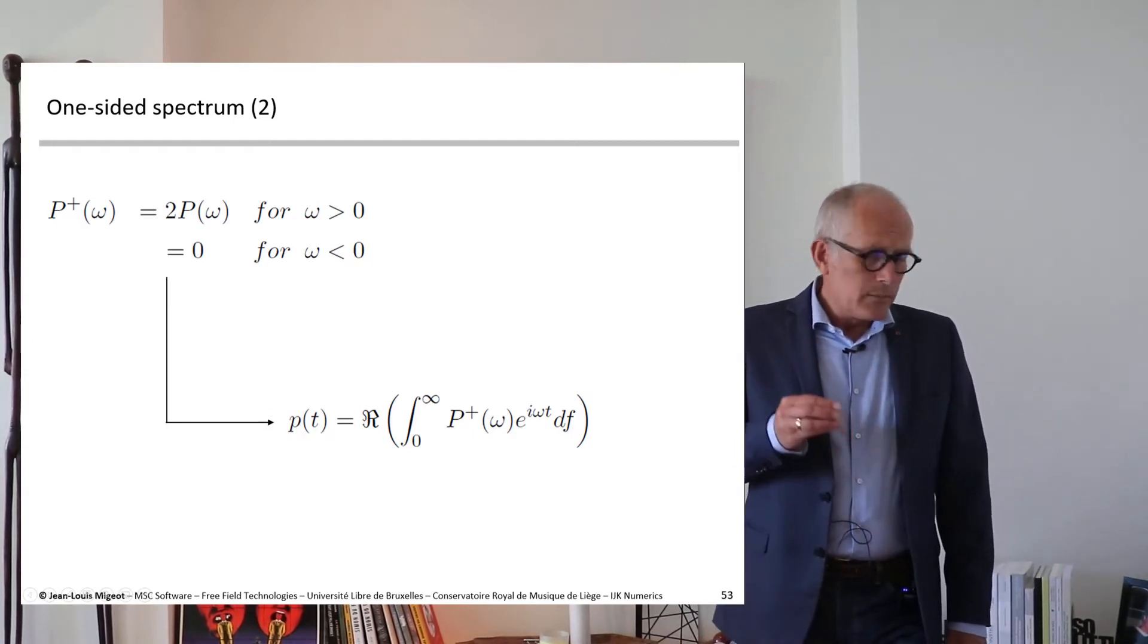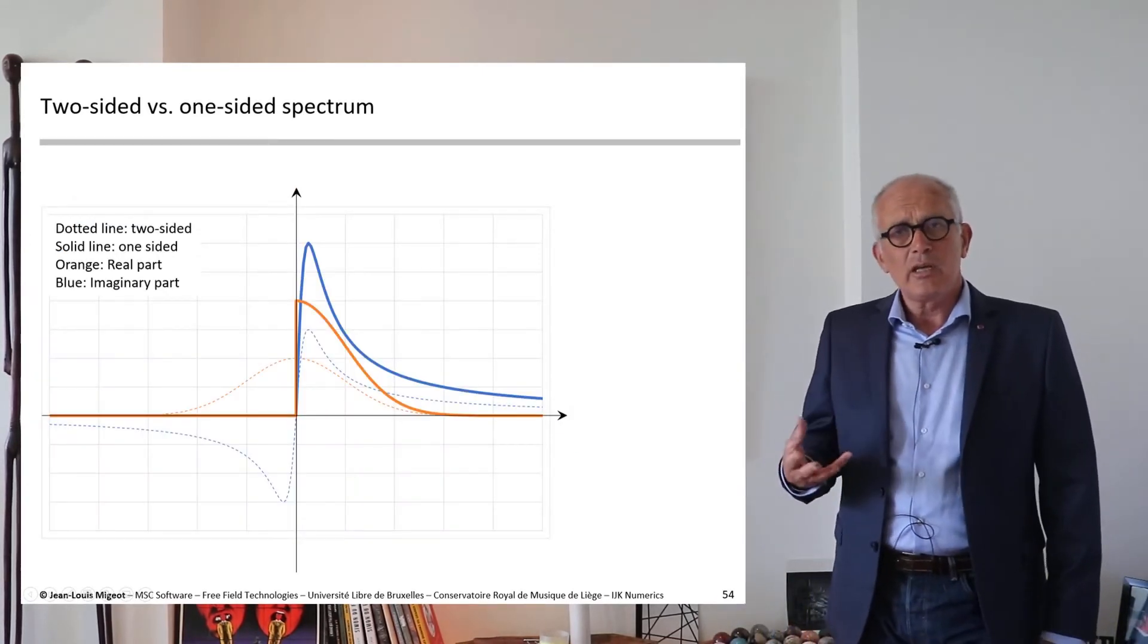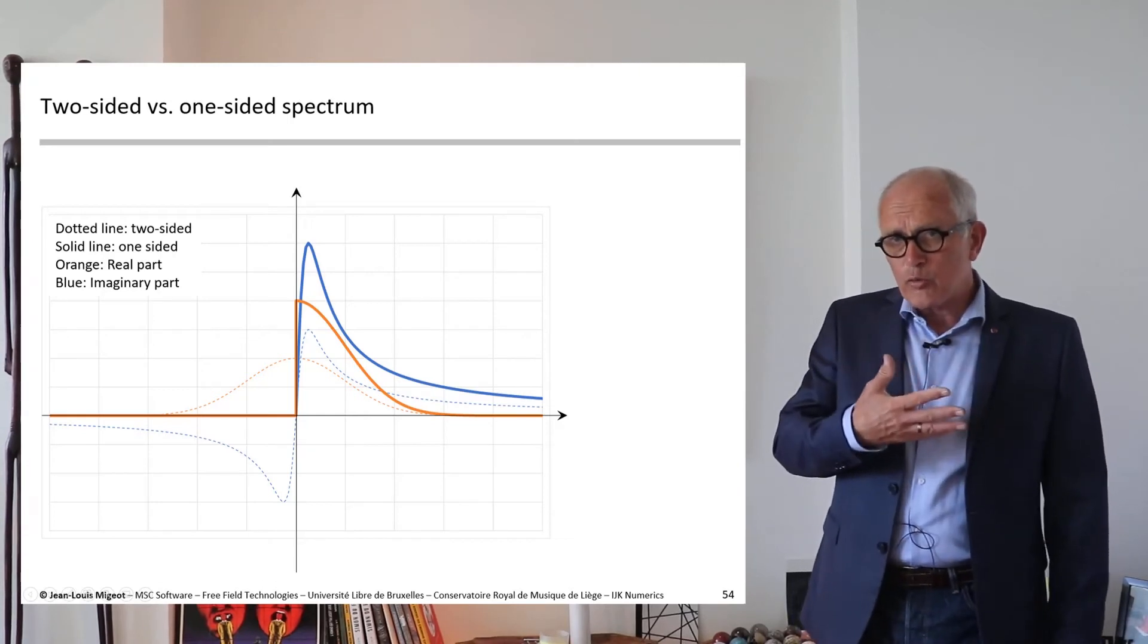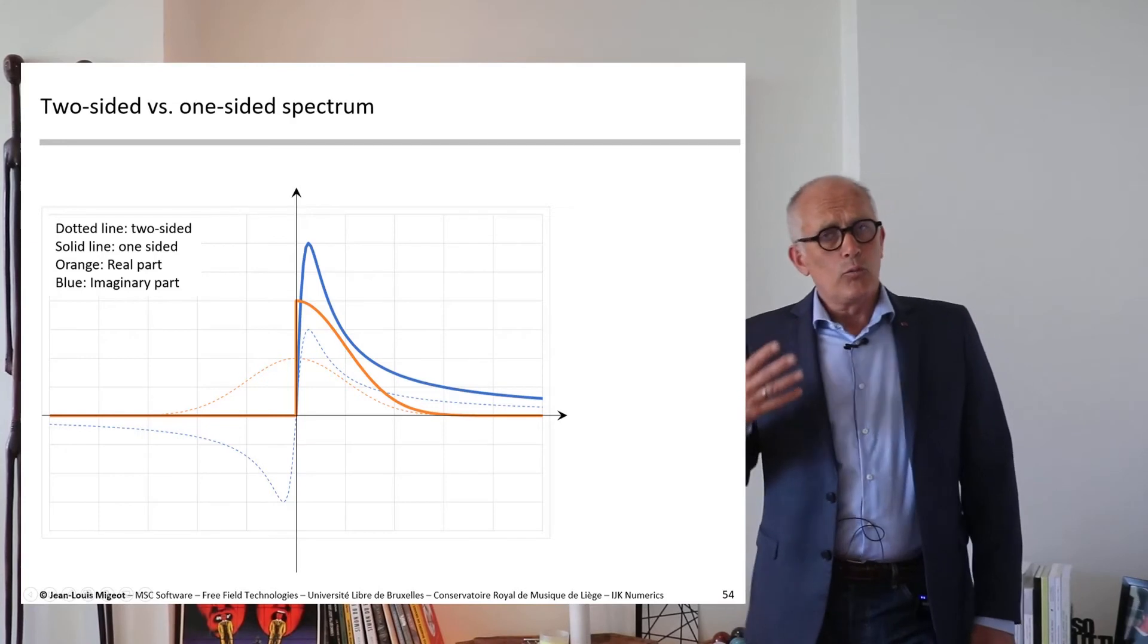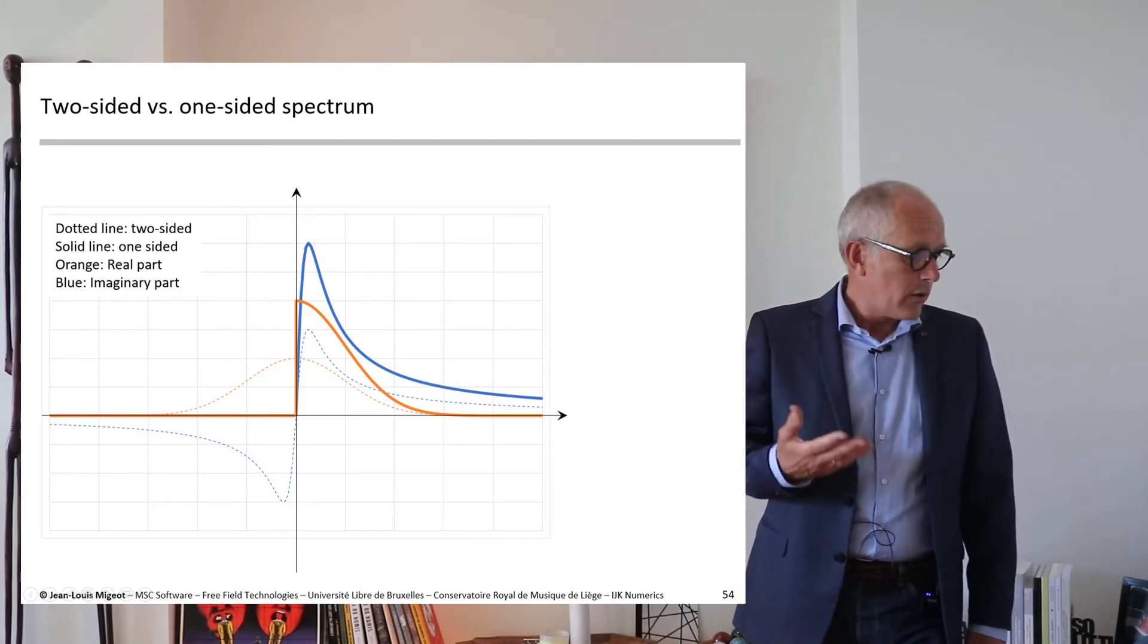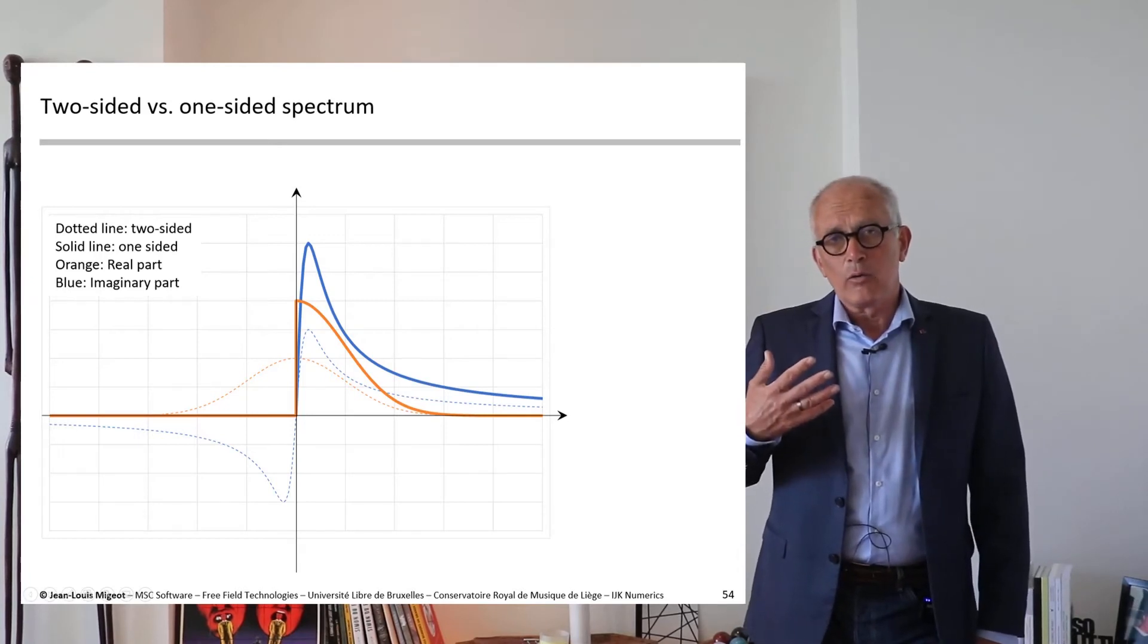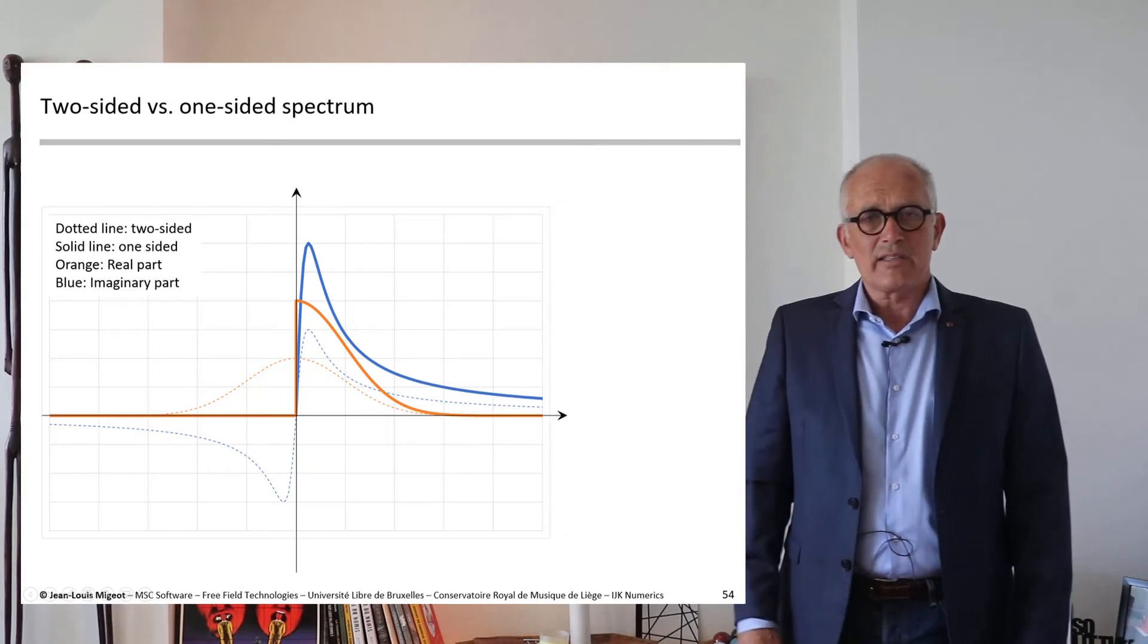So if you look at this graph now, you see the original spectrum with positive and negative frequencies, that we call the two-sided spectrum, and also in solid lines, the one-sided spectrum where we only have information on the right-hand side.